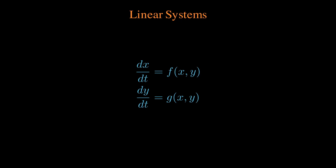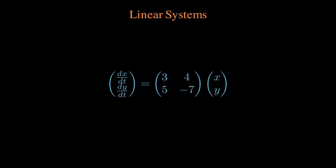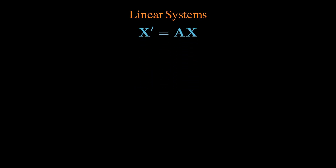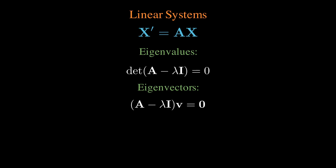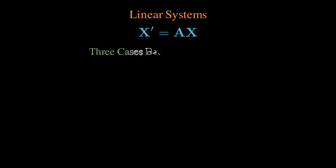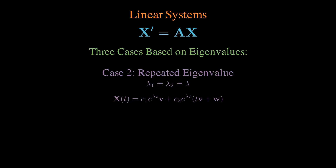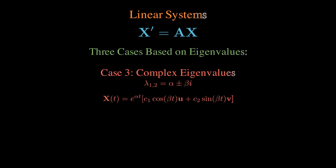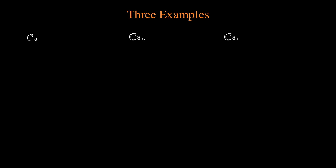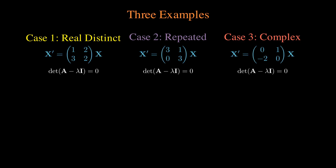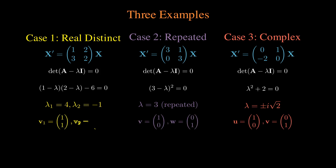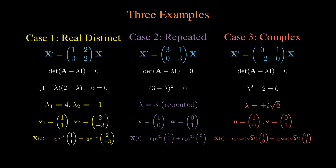Now let's talk about linear systems, where you have two dependent variables on one independent variable. If we have constant coefficient linear systems, we can write this in matrix form, which is extremely clean. To solve, we calculate eigenvalues using the determinant of (A − λI), then solve for eigenvectors by finding the v's that make it zero. Depending on what eigenvalues we get, they give different solutions — just solve for the eigenvalues, solve for the eigenvectors, and plug them into the final solution.